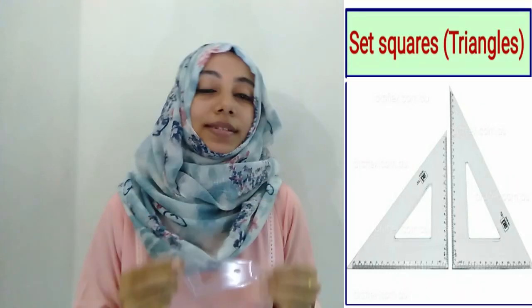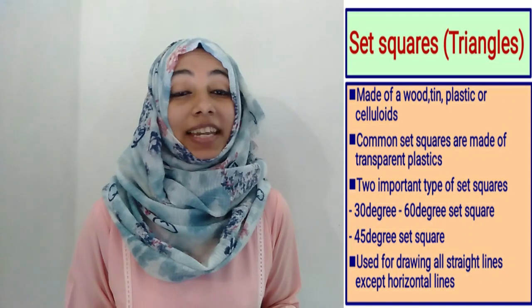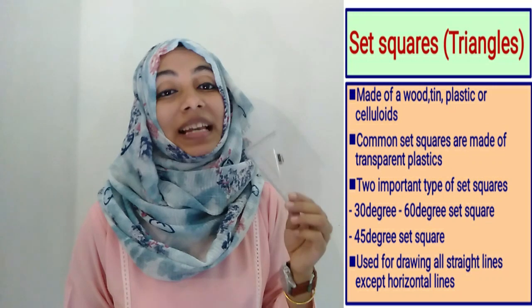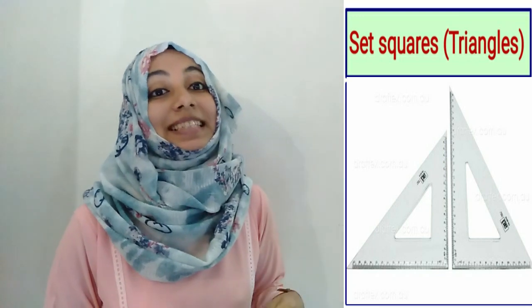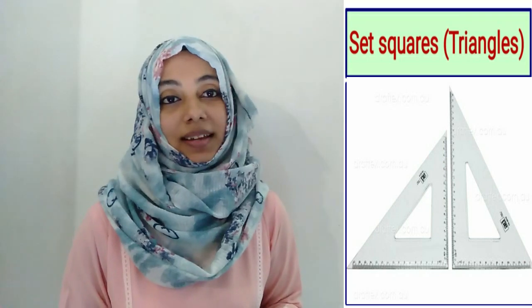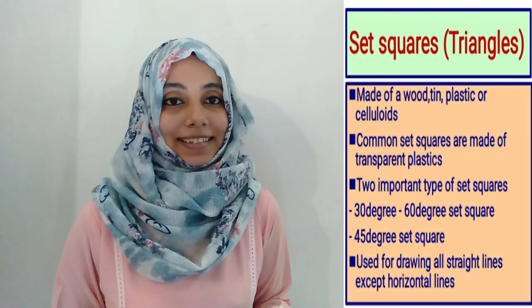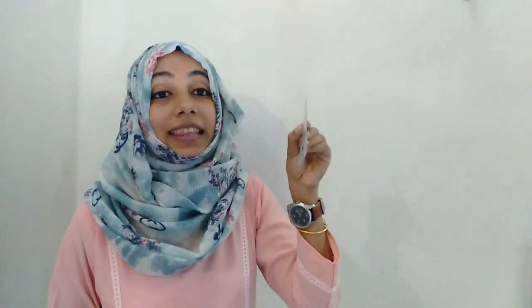Set squares are otherwise known as triangles. These are made up of wood, tin, plastic, or celluloid, but most commonly used set squares are made of transparent plastic. We have two important types of set squares: one is the 30-60 degree set square, and the second is the 45 degree set square. Set squares are used for drawing all straight lines except horizontal lines. In the 30-60 degree set square, the angles are 30°, 60°, and 90°. In the 45 degree set square, two angles are 45° and one angle is 90° — it is shaped like an isosceles triangle.